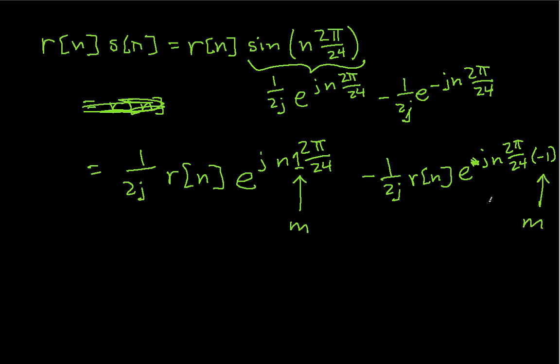So what this tells me, then, is that the Fourier series coefficients for v sub n, which I can write as d sub k, it's going to be 1 over 2j times the Fourier series coefficient for r, which, if I recall correctly, I called that a, a sub k. But because I have this frequency shift here, it's a sub k minus 1. And similarly, I have minus 1 over 2j, again, my a sub k. But now, my m is negative 1, so I have k minus m, so that's plus 1.